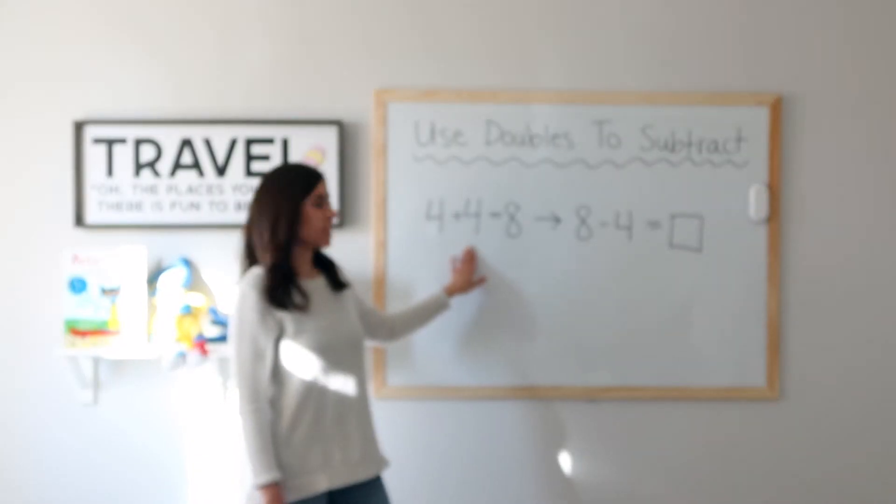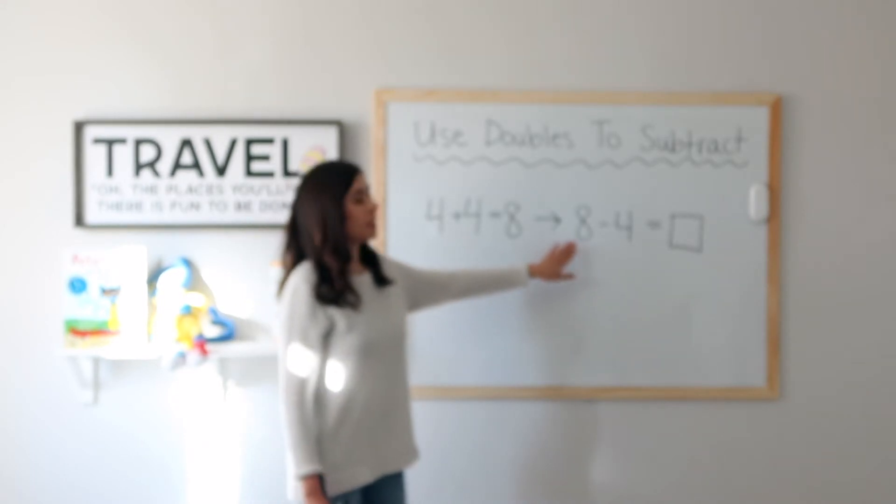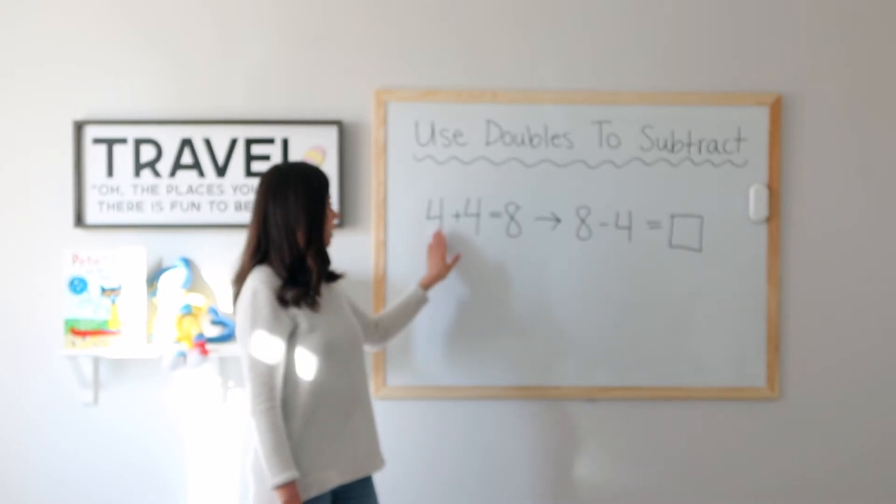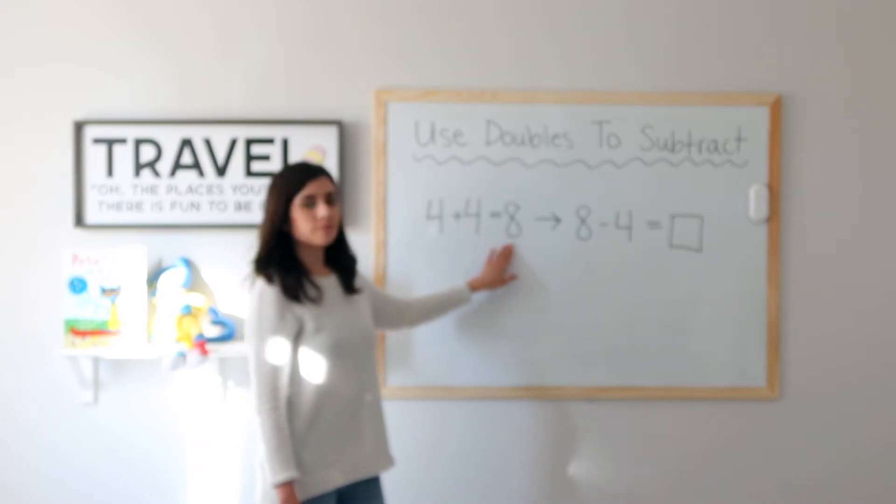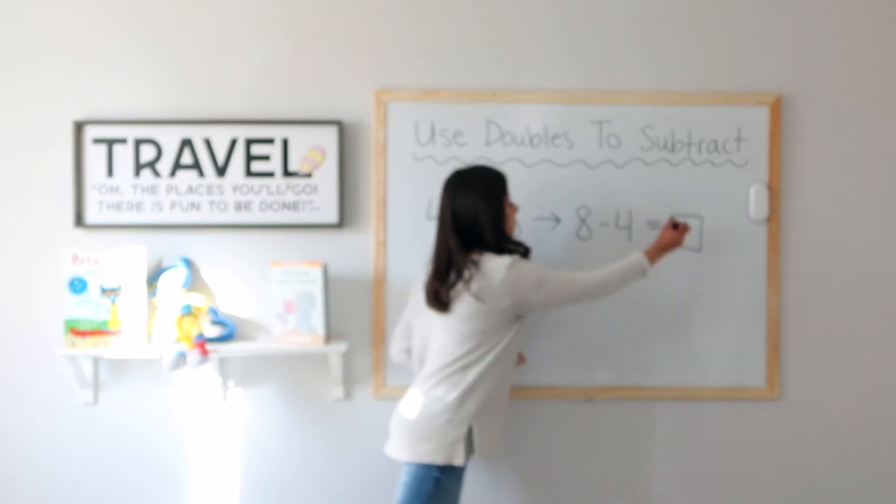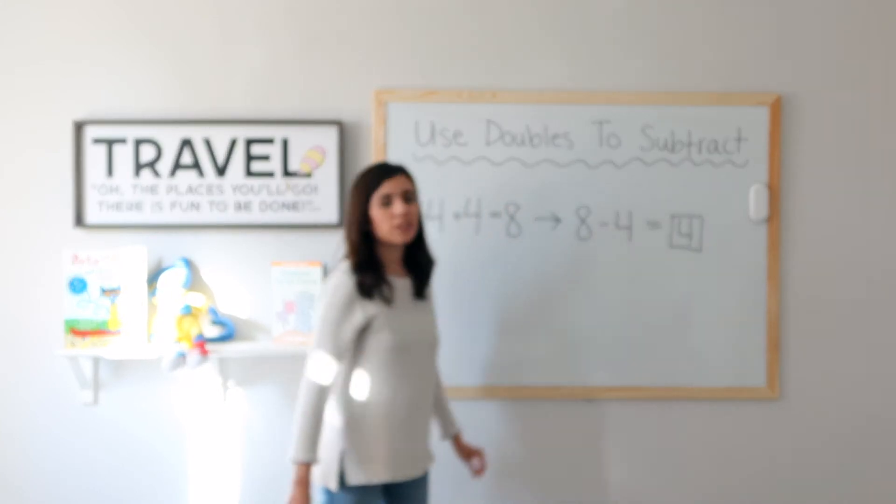4 plus 4 equals 8. I will use this to find 8 minus 4 by reading it backwards as a subtraction problem. 4 plus 4 equals 8, so 8 minus 4 equals 4.